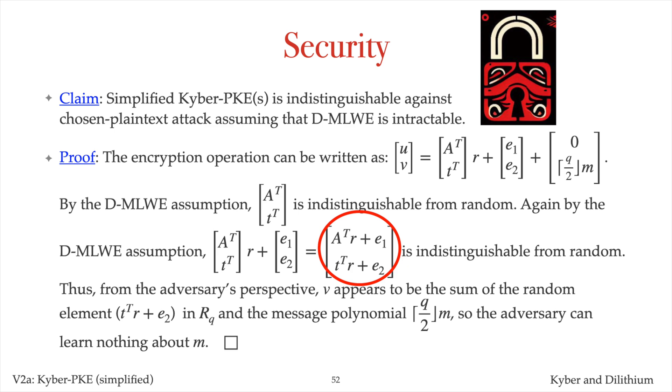Thus, from the adversary's perspective, V appears to be the sum of a random element in RQ, the element T transpose times R plus E2, and the message polynomial Q over 2 times M. Hence, the adversary can learn nothing about M from the ciphertext.